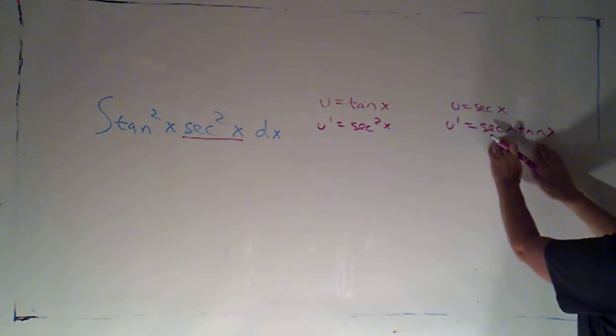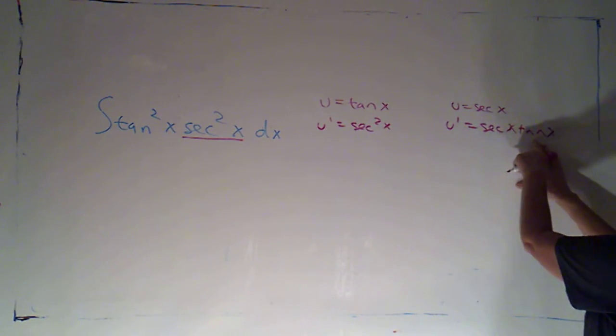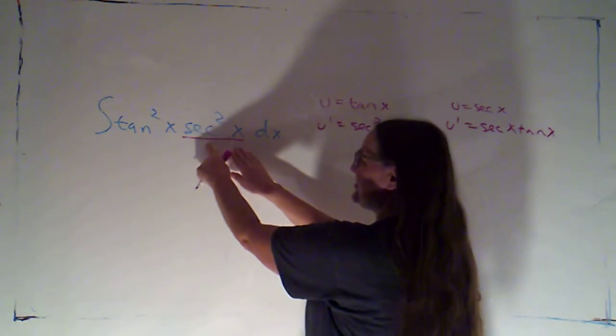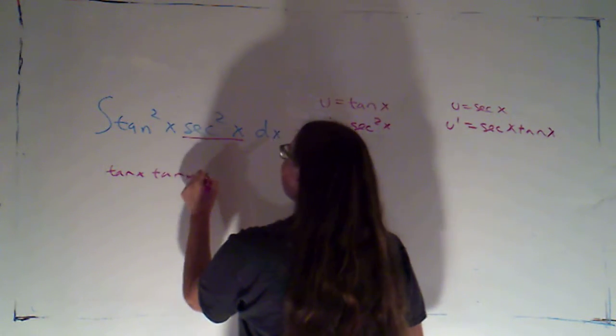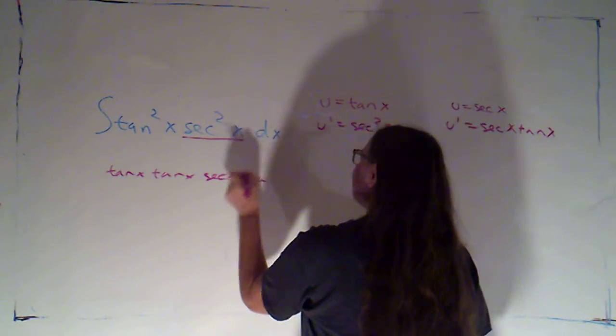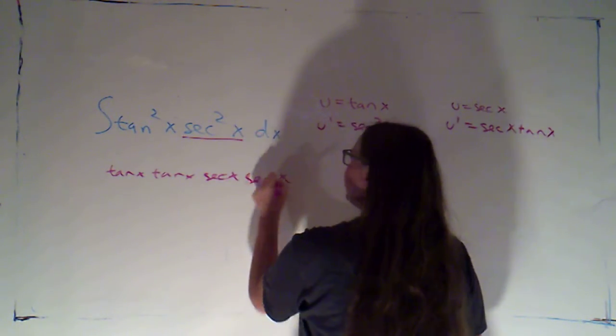I will just point out, I do have a secant x times tan x. Because what I could do is I could rewrite this as tangent of x times tangent of x, and secant of x times secant of x.